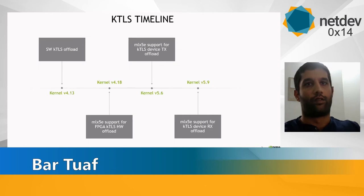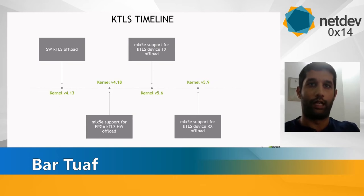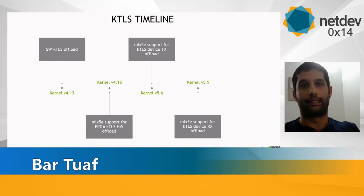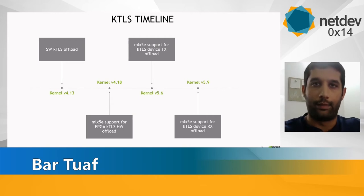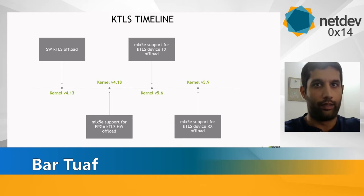The first kTLS implementation, which offloads crypto processing from the application layer to the kernel, was introduced in kernel version 4.13 as a software offload. NVIDIA Mellanox ConnectX-6 Dx kTLS TX offload support was introduced by the mlx5e driver in kernel version 5.6, and RX offload was added in kernel version 5.9. In between, an FPGA programmable implementation was also added by the mlx driver with reported offload in kernel 4.8.